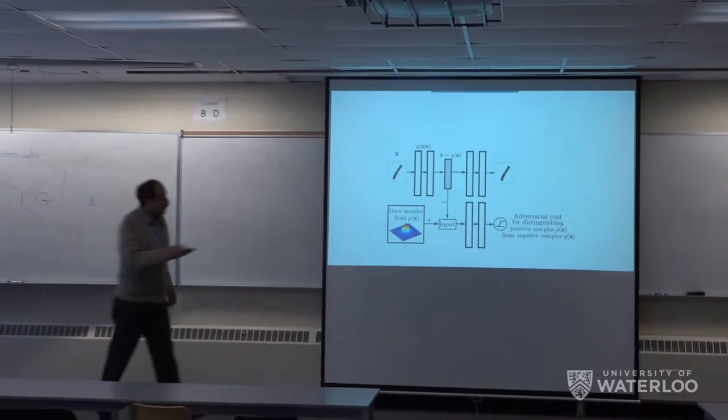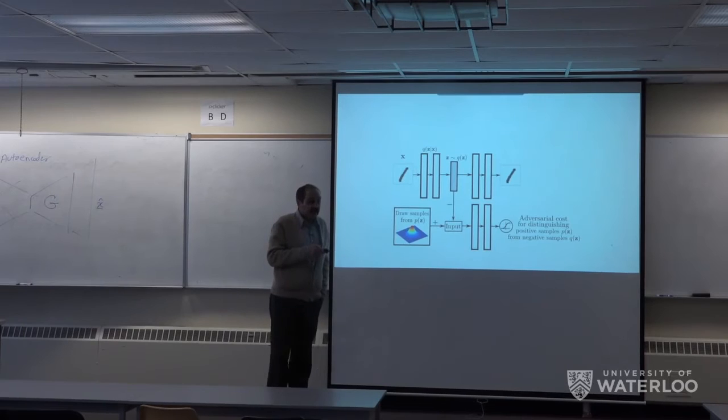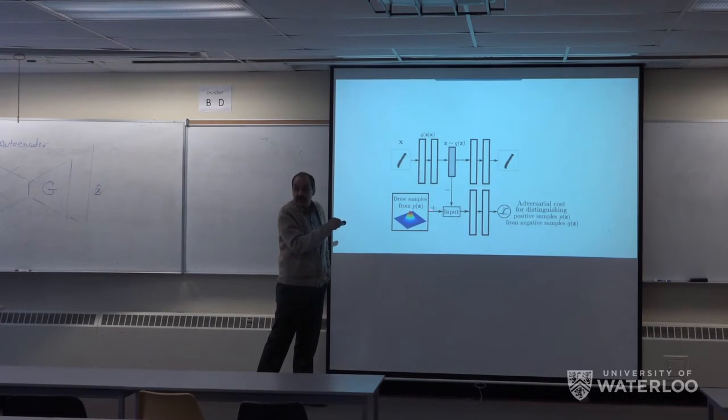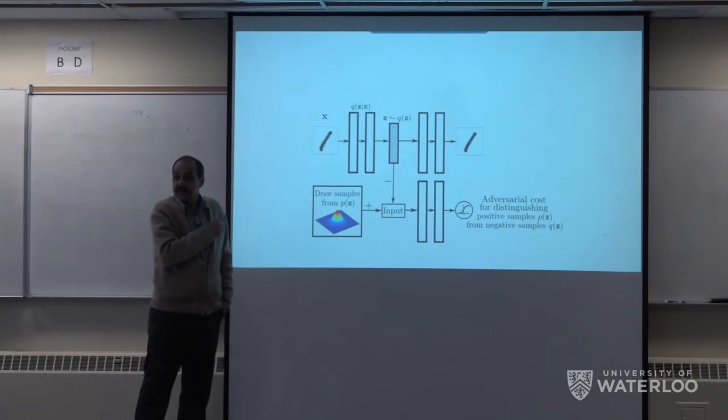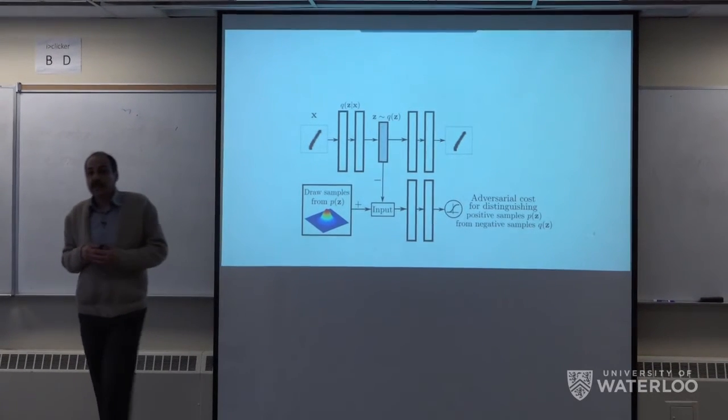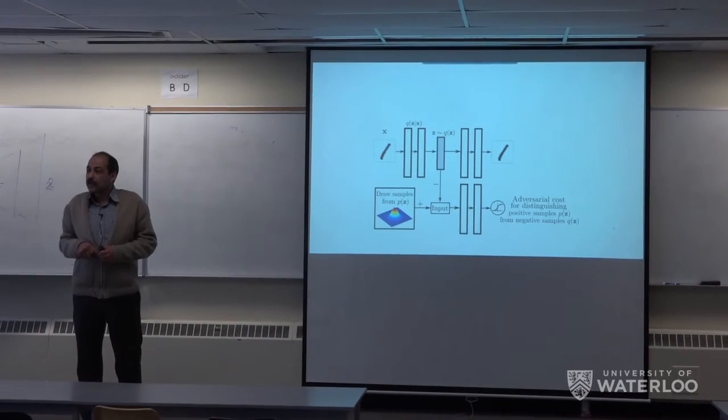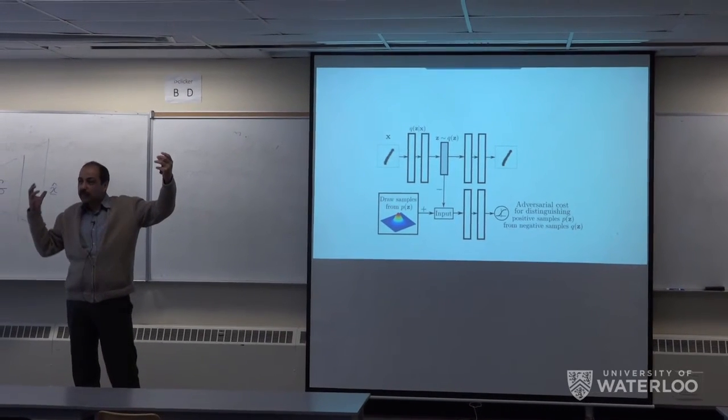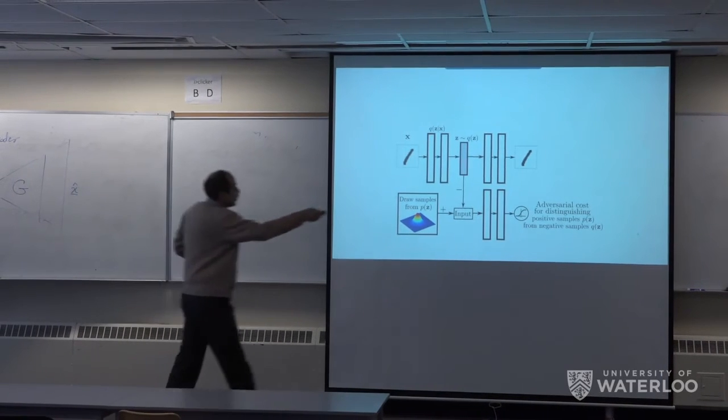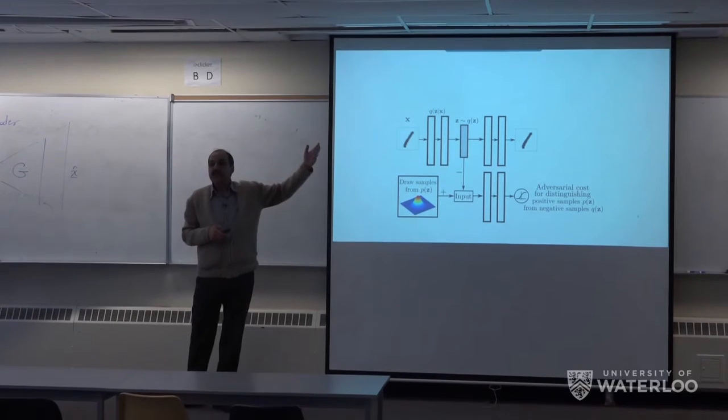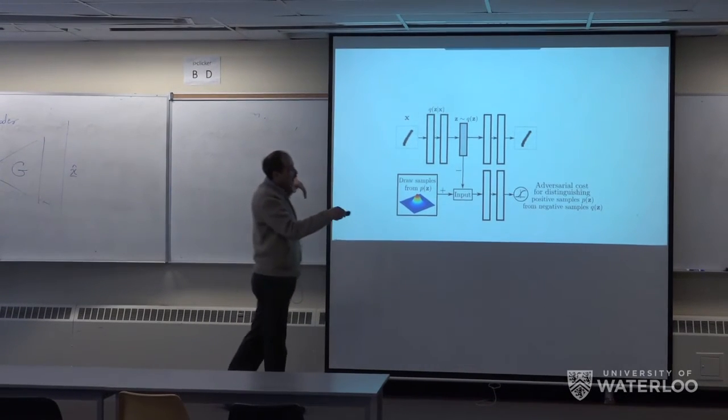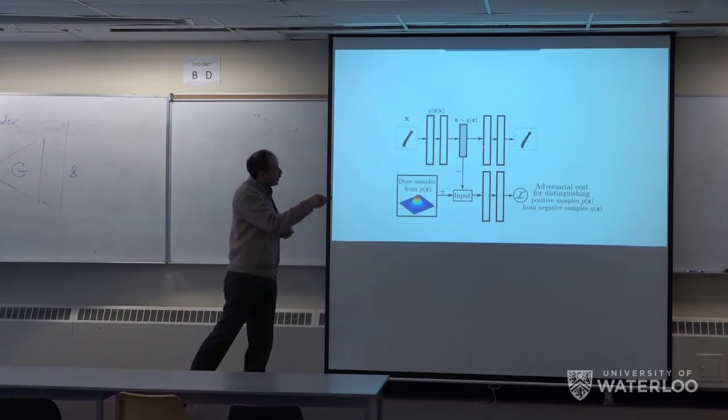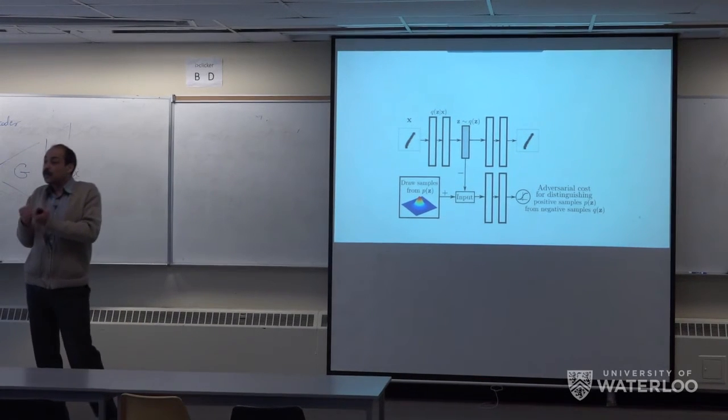I want to change this hidden space in a way that this classifier cannot make distinction between points that have been sampled from p and points that are generated here. So basically you have a classifier and you want to fool the classifier to not be able to distinguish between these two sources of input. Does it come from a Gaussian or does it come from this? And you train everything together basically. It's not a pre-trained classifier. You train this classifier, you train your model, and iteratively basically it would be one iteration on this network and one iteration on this network.